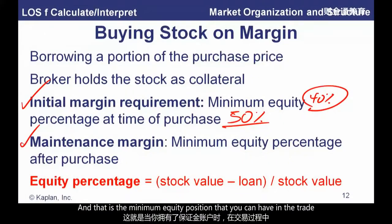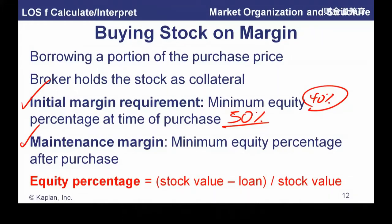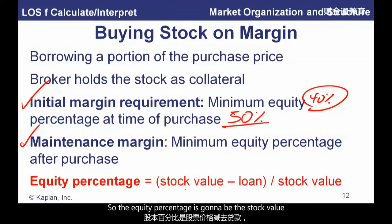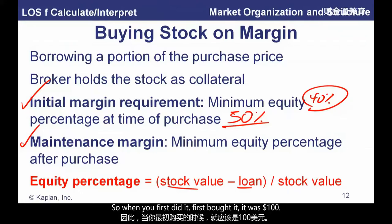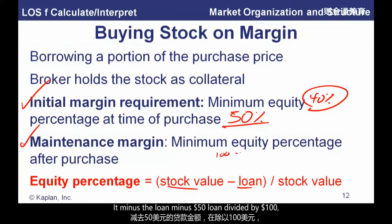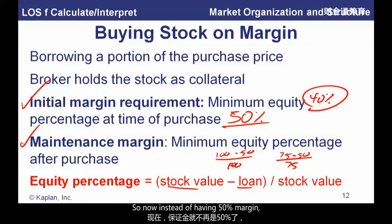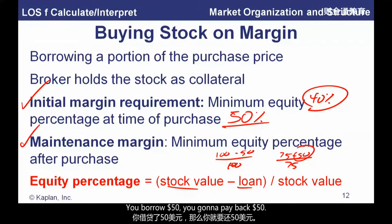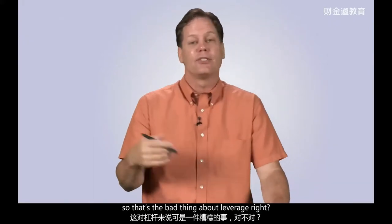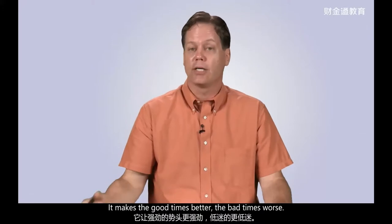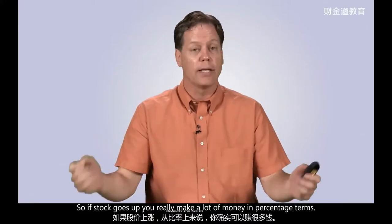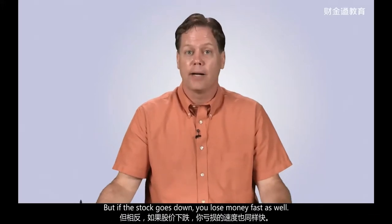If we buy a $100 stock on 50% margin, we put up $50 and get a loan for $50. But if the stock price falls — say from $100 down to $75 — then our equity is $75 minus $50 loan over $75, which is only 33% margin. Margin falls because the loan size doesn't shrink — you borrowed $50, you've got to pay back $50 — but the overall position size does. That's the bad thing about leverage: it makes the good times better and the bad times worse. If the stock goes up you make a lot in percentage terms, but if it goes down you lose fast as well.